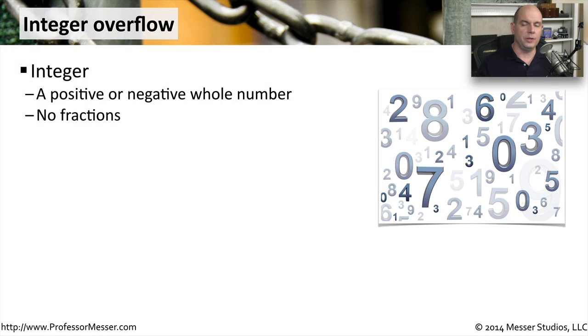An integer is a whole number. The number 7 is an integer. The number 7.1 would not be an integer because it has a decimal place or fraction associated with it. Negative numbers can also be integers, so 32 and negative 32 are both integers.